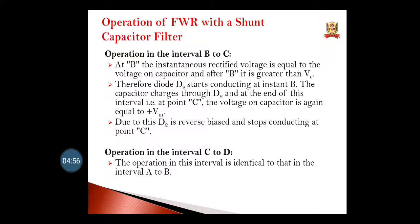In the interval B to C, at instant B the instantaneous rectified voltage equals the voltage on the capacitor. After B it is greater than Vc, therefore diode D2 starts conducting at instant B and the capacitor charges through D2. At point C, the voltage on capacitor is again equal to Vm, and diode D2 is reverse biased and stops conducting. The operation in interval C to D is identical to that in interval A to B.